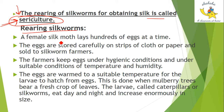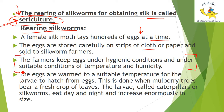Let's start. Female silkworms lay hundreds of eggs at a time. The eggs are stored carefully on strips of cloth. The eggs are stored in a good condition — proper air, temperature, and humidity are maintained so that caterpillars can hatch out successfully.